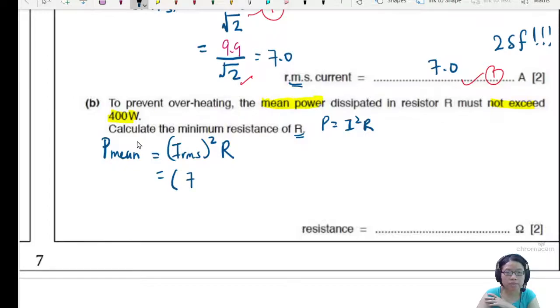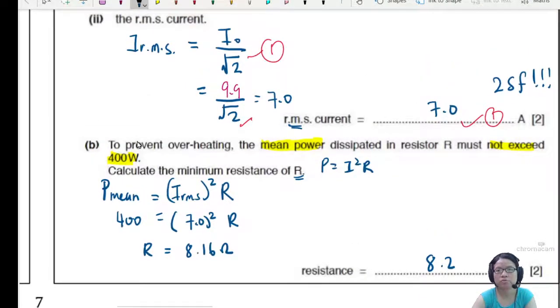So the mean square current would be 7.0 square. We are looking for this resistance. And the maximum average power is 400. Okay. So now you can find R. And R will be 8.16 ohm. You can write into 2sf or 3sf. So this 7.00, generally, I would say at least 2sf. The general convention is 2 to 3sf for final answers.